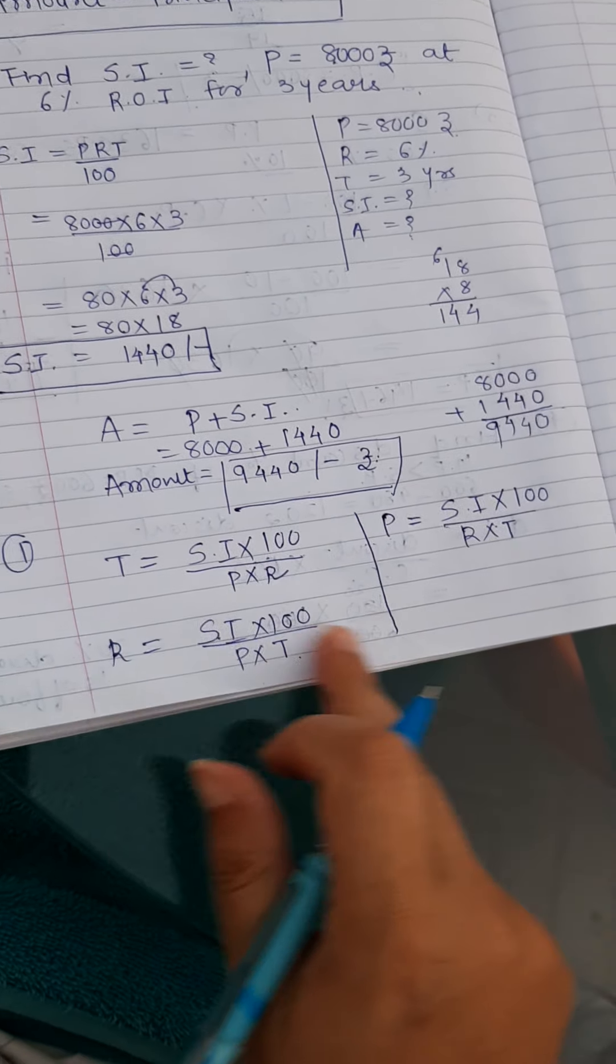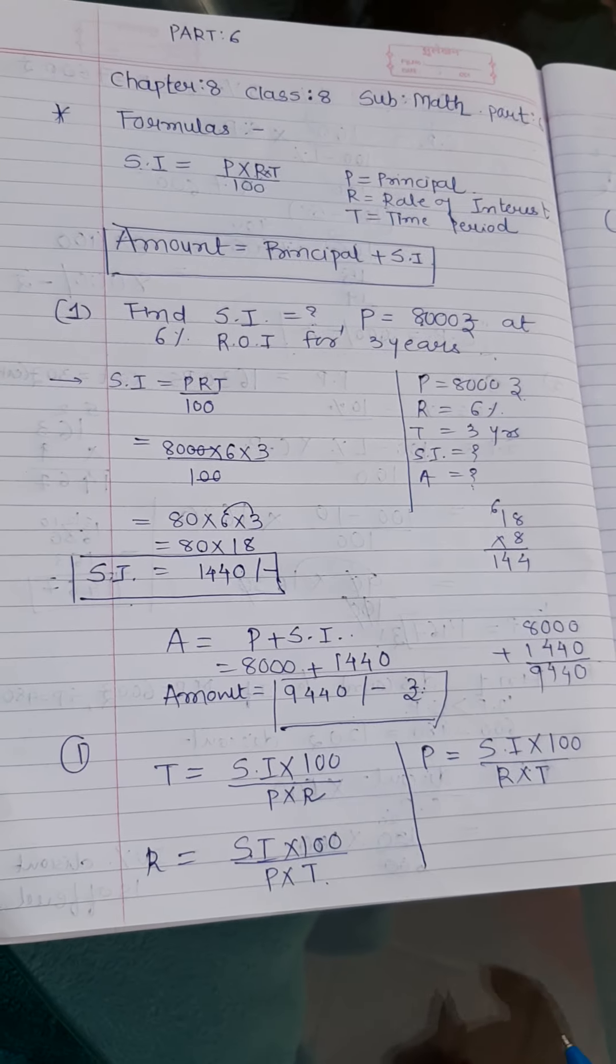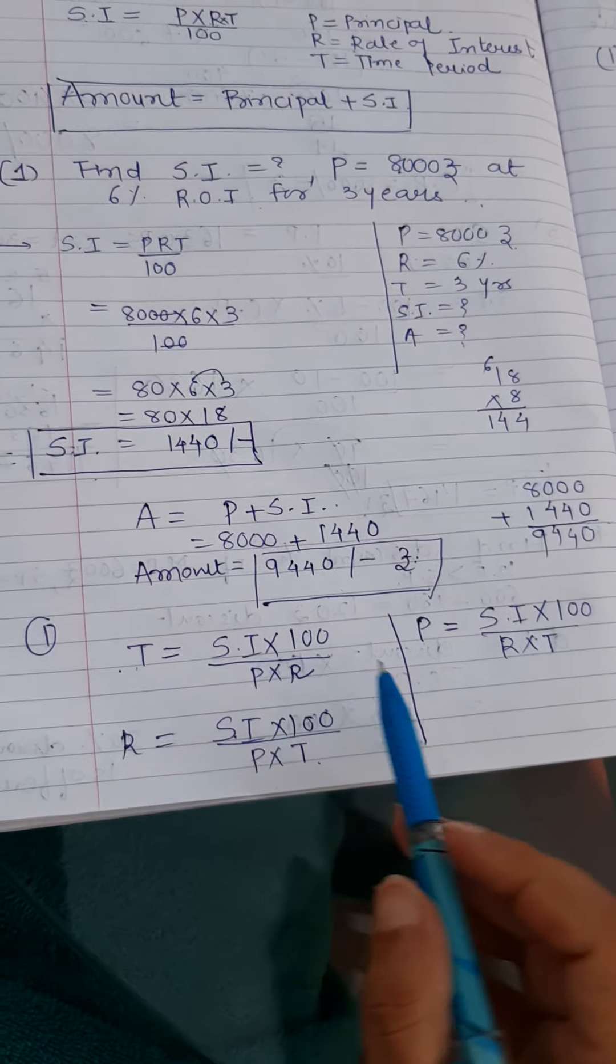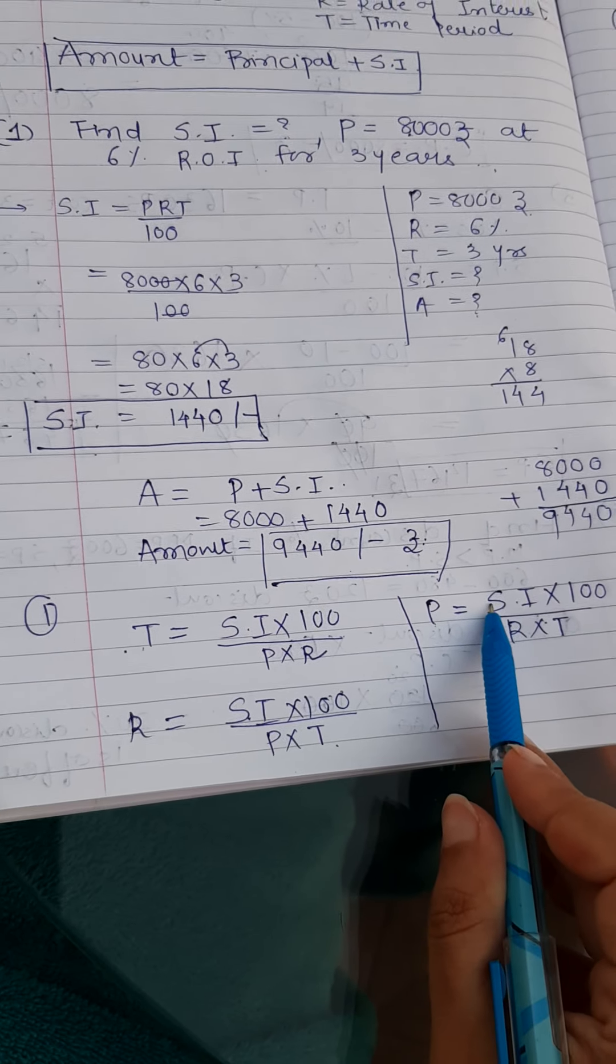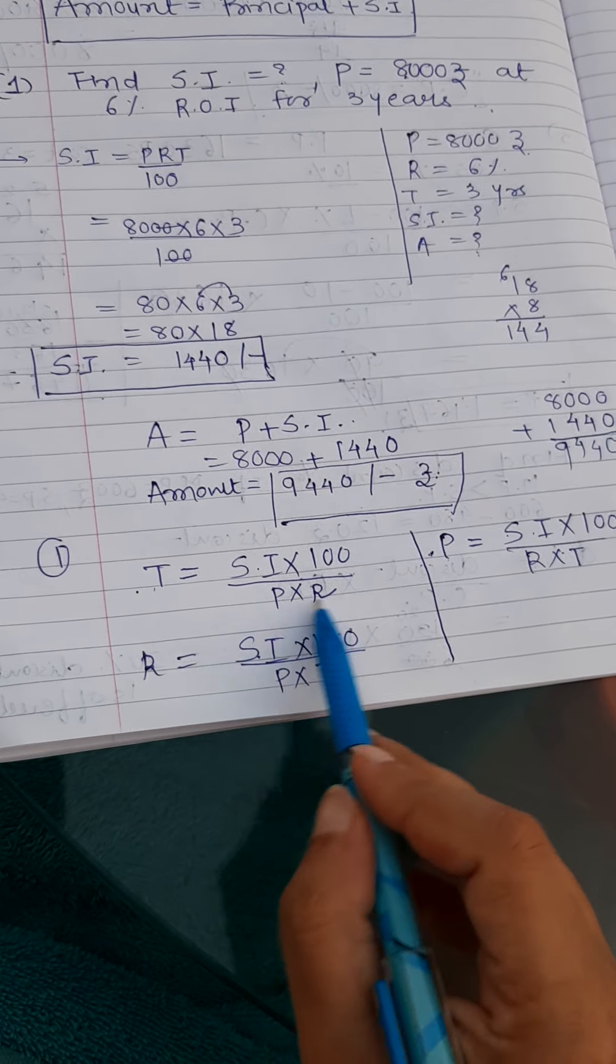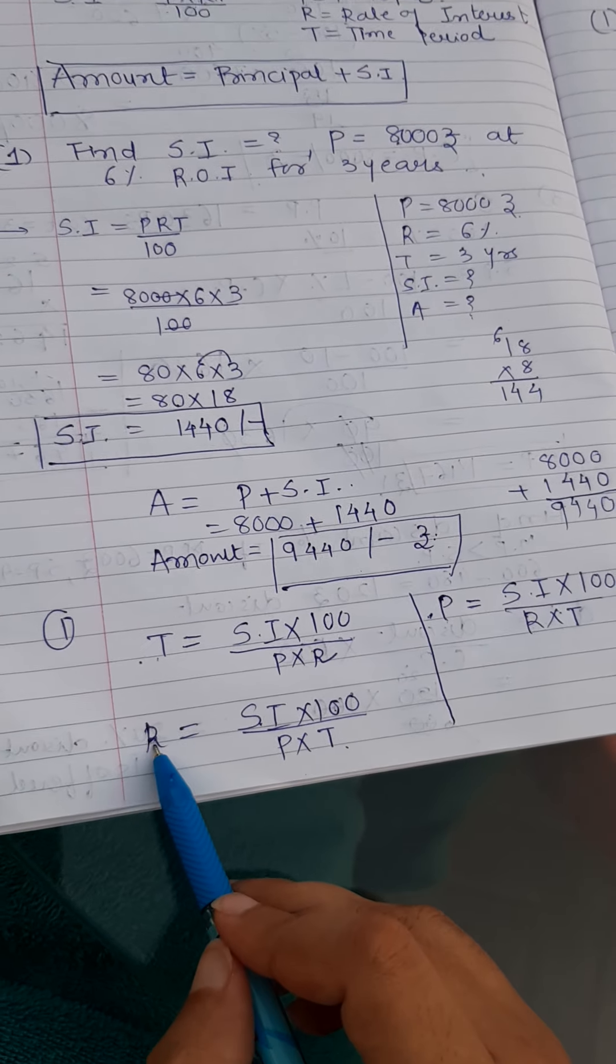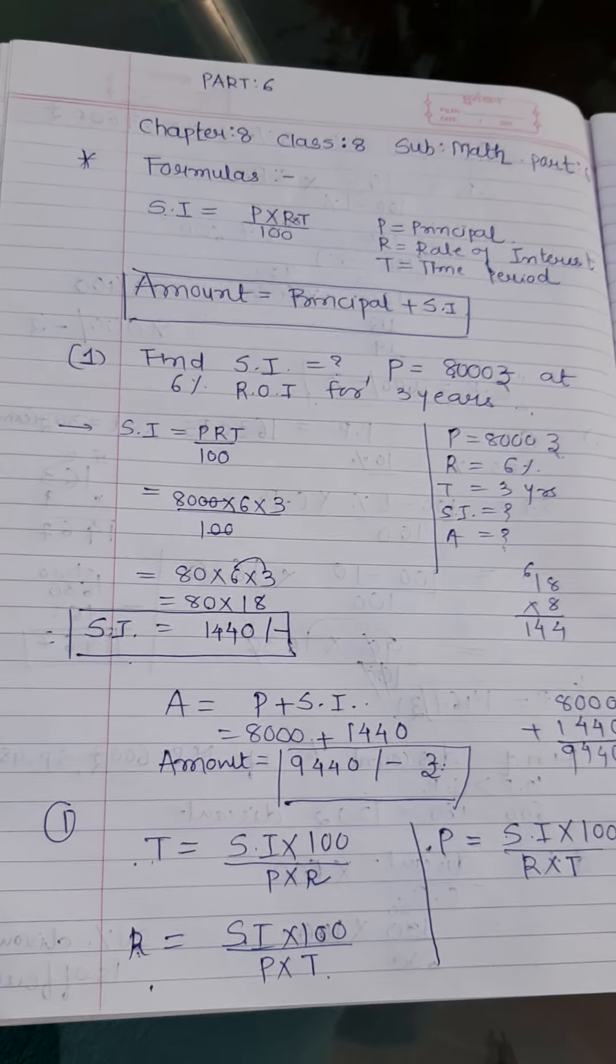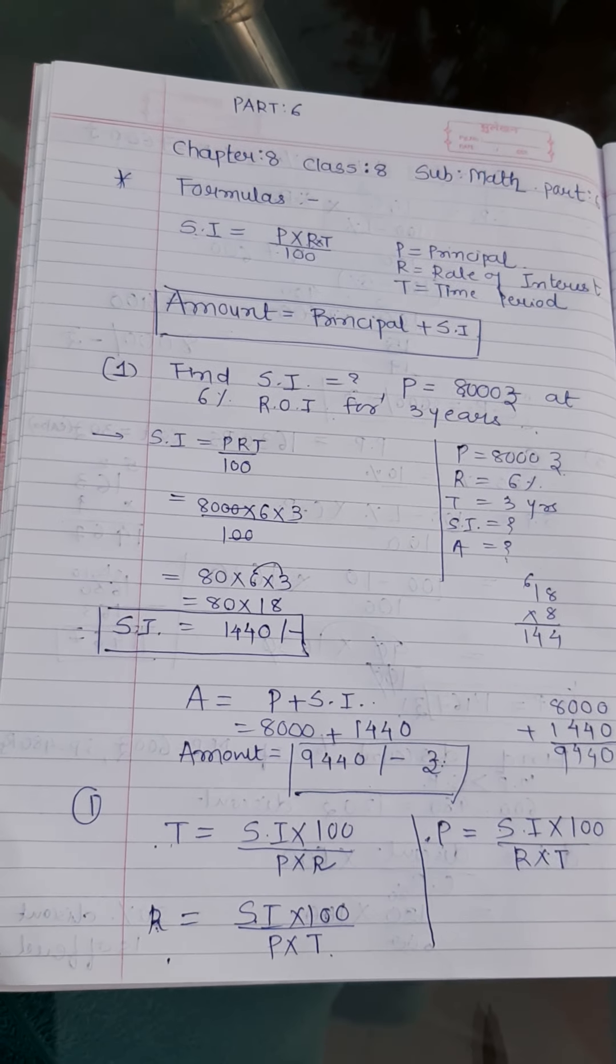Right. So just whatever value is missing. Suppose T is missing, time is missing, you need to find time, so make T as a subject. If principle is missing and SI is given, RT is given, so make P as a subject. And if everything else is given and rate of interest they have not given, you need to find rate of interest, then make rate of interest as a subject. I hope you have understood this.